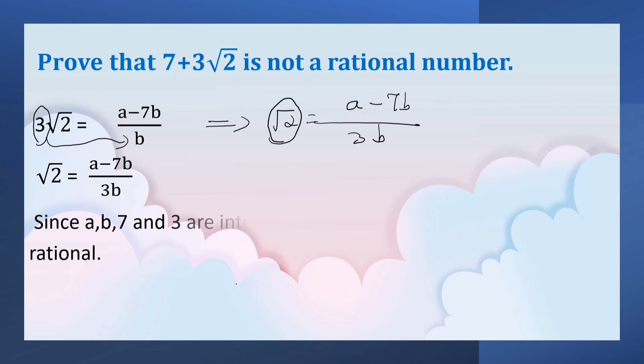Here we can observe that a, b, 7, and 3 are integers. We get a minus 7b by 3b is rational, so root 2 is also a rational number.